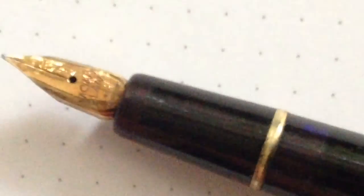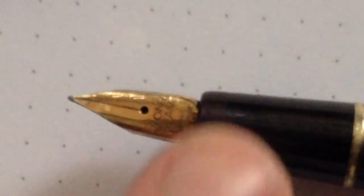Here you can see this is the mechanism for the filling system. And this was the first Mont Blanc pen with this kind of mechanism that you didn't have the straps.